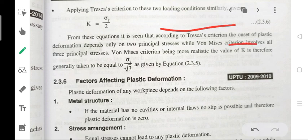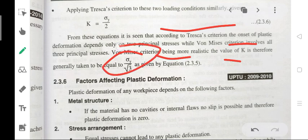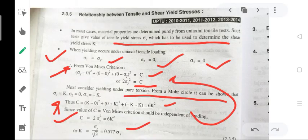involves all three principal stresses. Von Mises' criteria being more realistic, the value of k is therefore generally taken as sigma_y/√3. These are the relationships between tensile and shear yield stress.